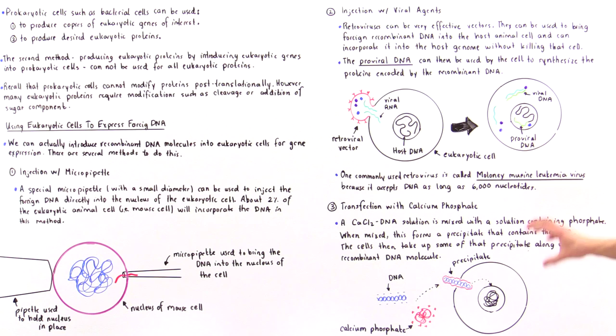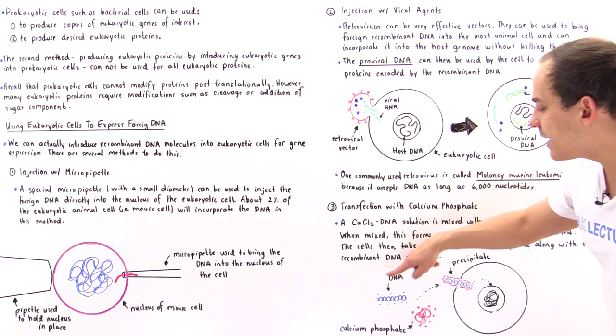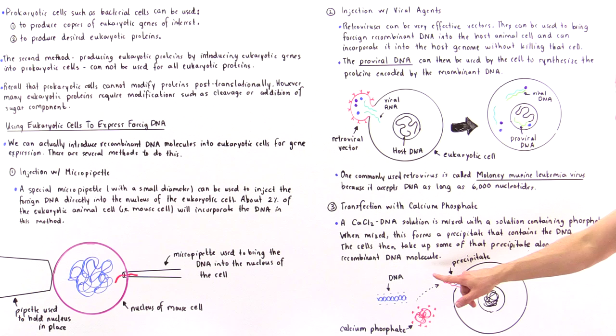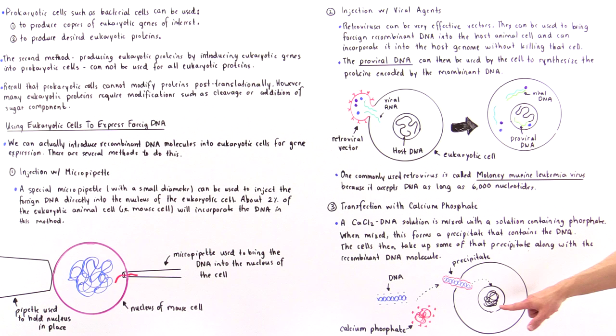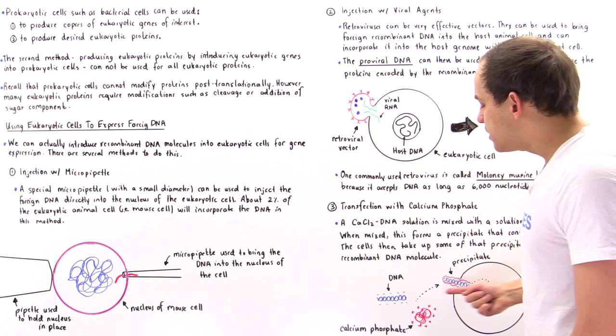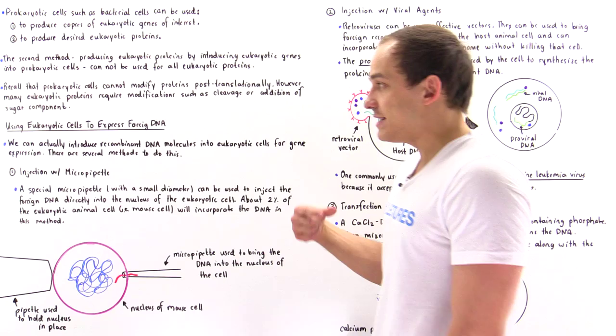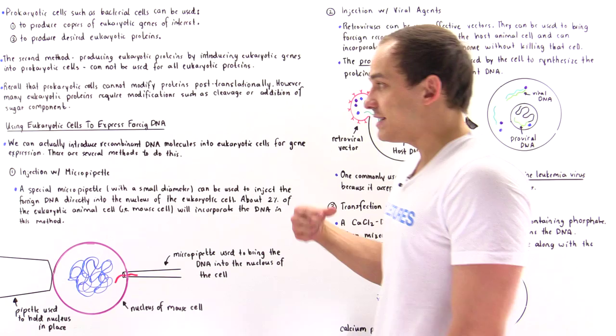As shown in the diagram, we have that double-stranded DNA molecule we want to inject into our cell. The calcium phosphate solution combines with the DNA to form a precipitate, and then the cell uptakes that molecule — including the recombinant DNA — into the cell. That DNA is then incorporated into the cell's genome inside the nucleus, and by this method we can produce proteins encoded by that DNA molecule. These are the three common methods by which we can inject DNA molecules into eukaryotic cells to express and produce proteins of interest.